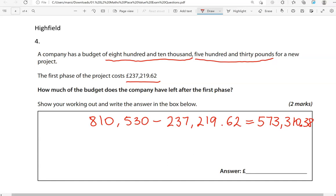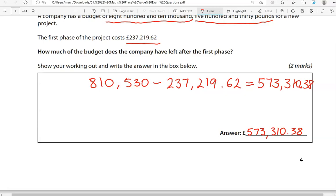And it gives us 573,310.38. So in terms of money, that is 573,310 pounds and 38 pence. And this is the end of the questions.